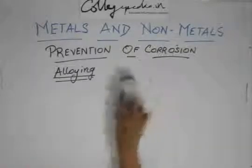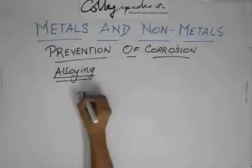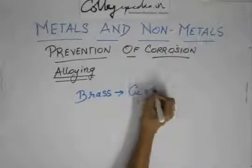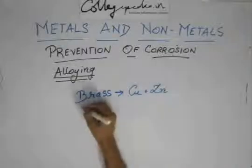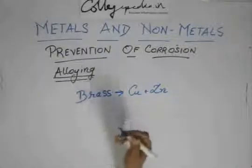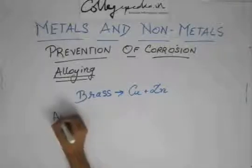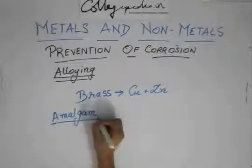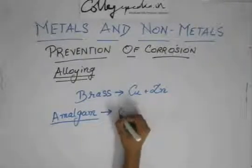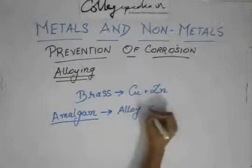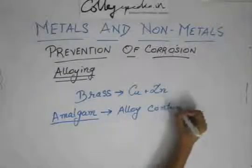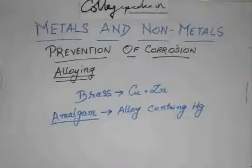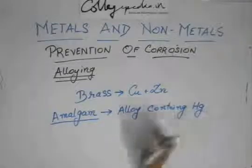We also have brass, which is an alloy of copper and zinc. Then we have amalgams — an amalgam is simply an alloy that contains mercury. Nothing else: if any alloy contains mercury, it is known as an amalgam.